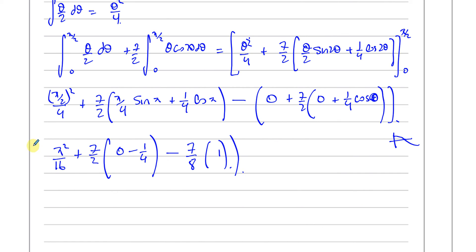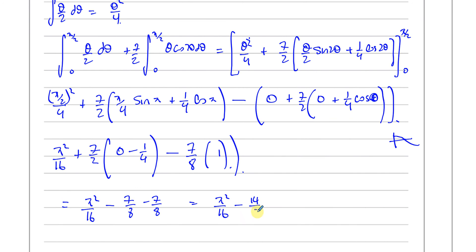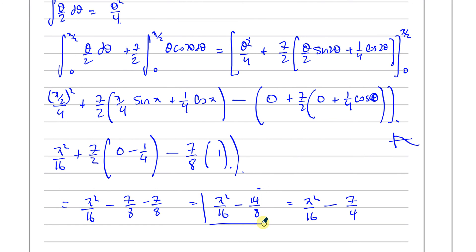That gives π²/16 minus 14/8, which simplifies to π²/16 minus 7/4 in its simplest form. So the final answer is π²/16 − 7/4.